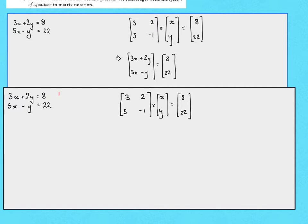Let's label the first equation as equation 1 and the second as equation 2. To solve the simultaneous equations we want x equal to something and y equal to something. So we need to try and cancel out the y's from equation 1, and cancel out the x's in equation 2, by repeatedly adding or subtracting multiples of one equation from the other.